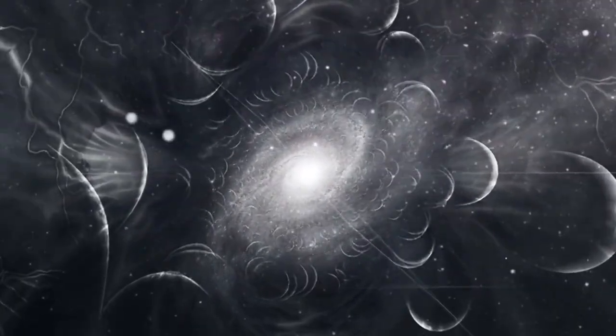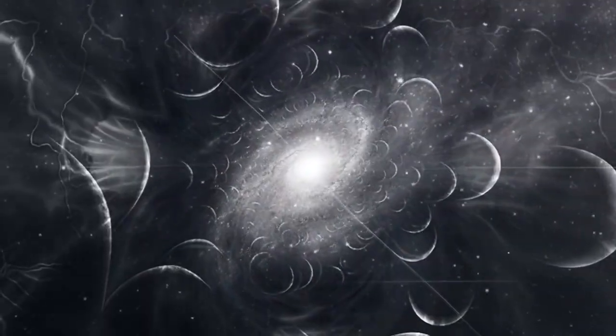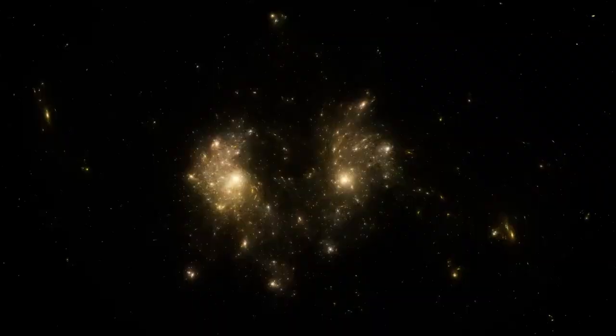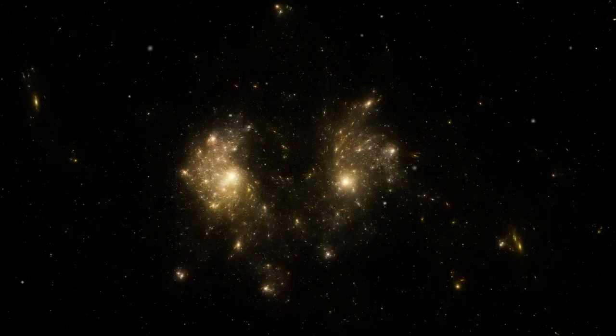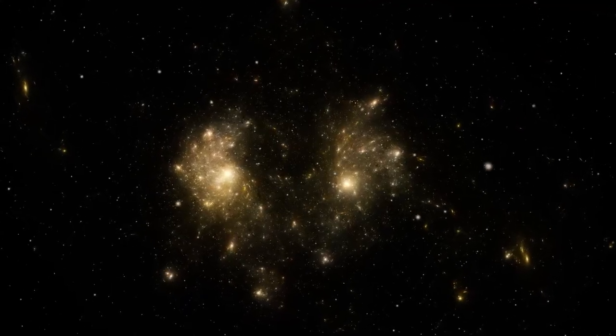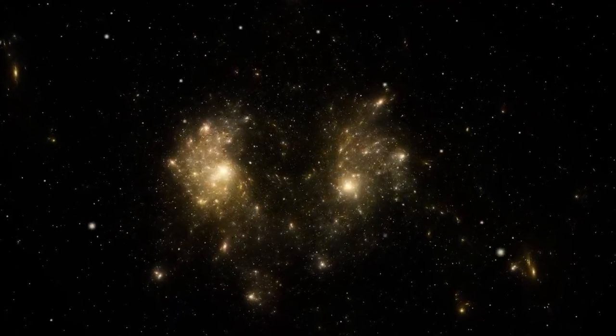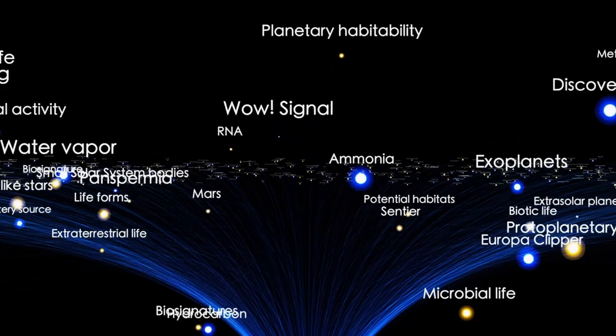Our models say galaxies need billions of years to form their intricate spirals and dense cores, yet here they are, fully shaped, brimming with stars. These cosmic rebels, dubbed impossible galaxies, are too massive, too structured, too bright for their time. Scientists are scrambling to explain them.